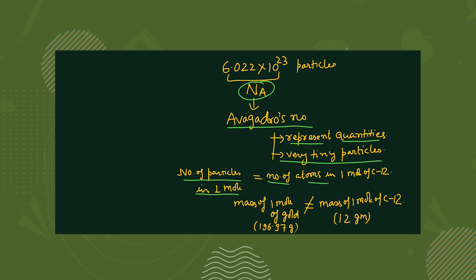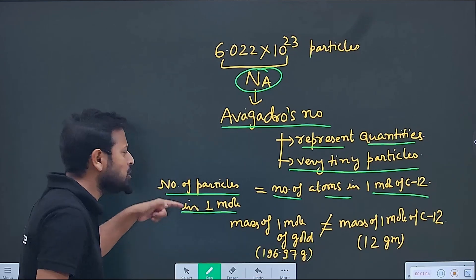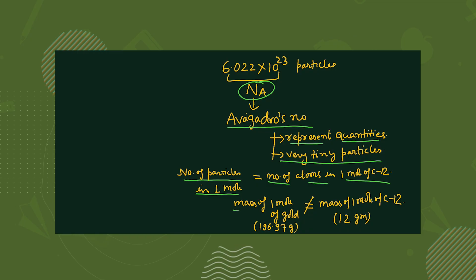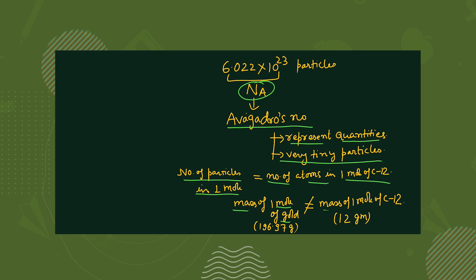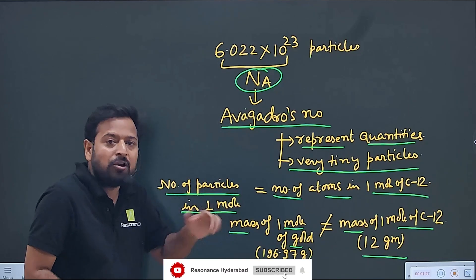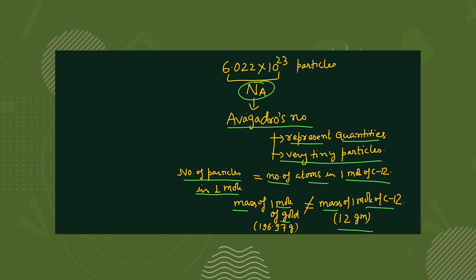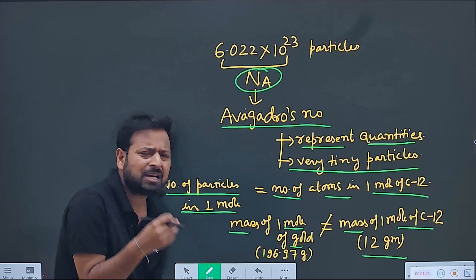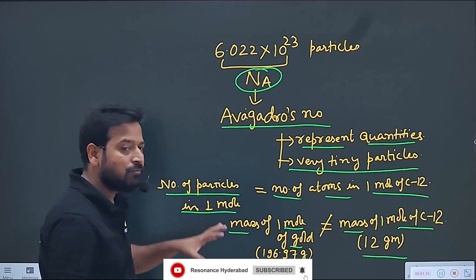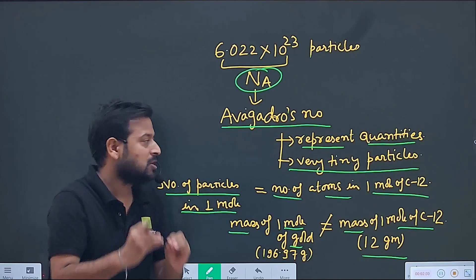The number of particles in one mole of carbon-12 is Nₐ, and in one mole of any substance we also have Nₐ particles. But surprisingly, students sometimes get confused: the mass of one mole of gold will not be equal to the mass of one mole of carbon-12. The number of atoms in one mole is the same, but not the mass — because the mass of one molecule of gold differs from the mass of one molecule of carbon-12 or water. In the next videos we will see exactly what molar mass means.